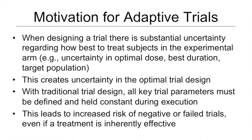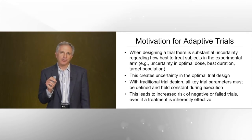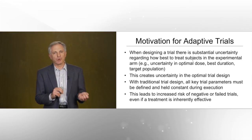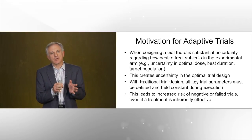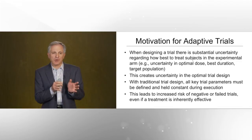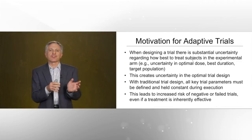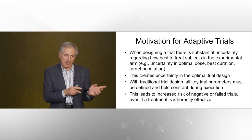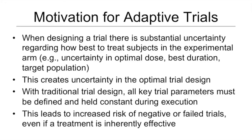When one designs a clinical trial, there's always substantial uncertainty at the beginning regarding how best to treat subjects in the experimental arm — uncertainty in the best dose of the drug, the duration of treatment, or exactly what the target population should be. That uncertainty creates uncertainty regarding what the optimal trial design would be. Yet with a traditional approach, all the key clinical trial parameters determined at the beginning are held constant during trial execution — essentially the trial design you start with is the trial design you carry through to the end.